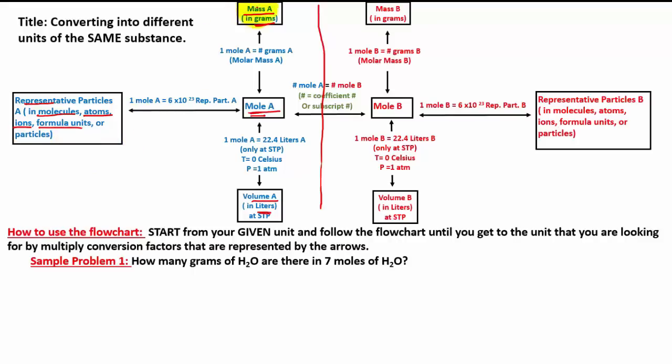Now, those are the four major units that you have to know. The rest is the three conversion factors that relate the units together. In this case, going from mass A is going to be one mole of A equal to the number of grams of A. That number of grams is the molar mass of whatever the substance is.